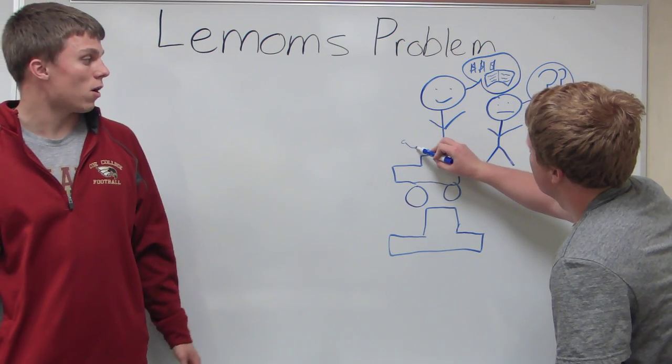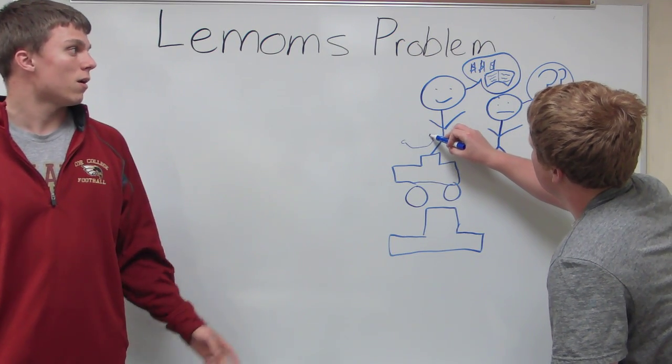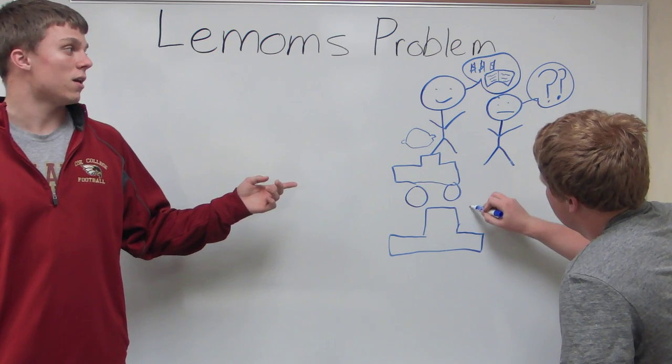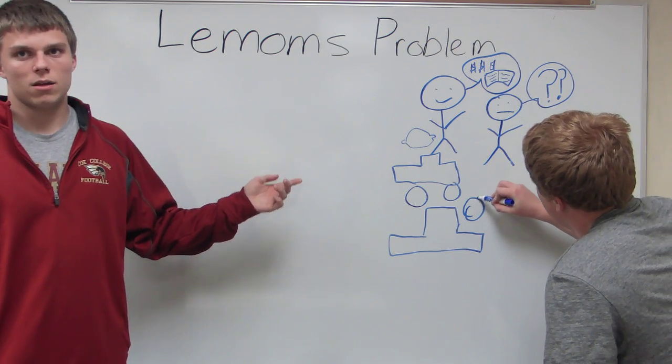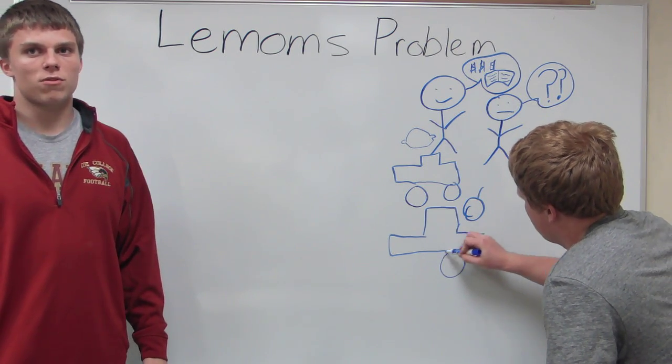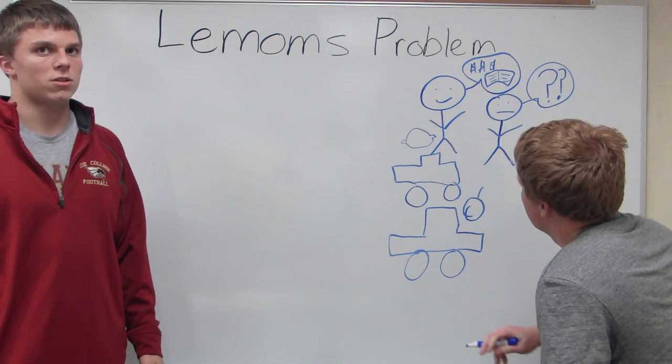The good ones are the plums, the ones that you want. The dealer knows this and the buyer does not. So when one person has more information than another, it's called asymmetric information.